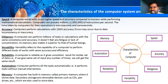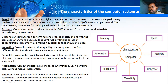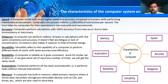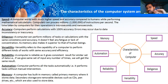Next are the characteristics of computers. A computer has certain features or capabilities that make it useful. Just as a mobile phone has features, a computer also has its own characteristics. The main characteristics are: speed, accuracy, diligence, versatility, reliability, automation, and memory.